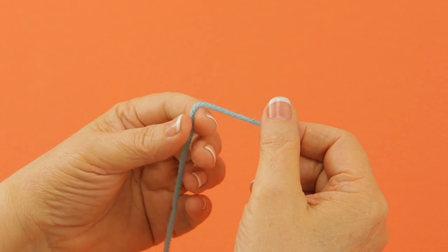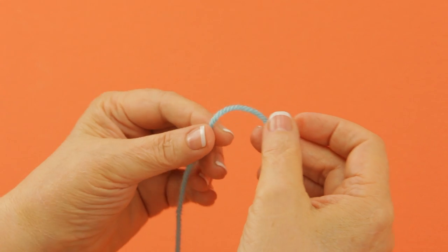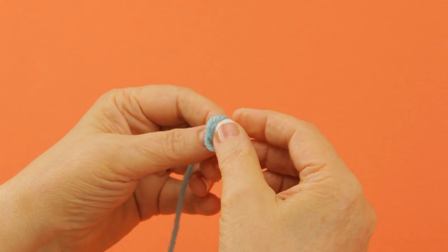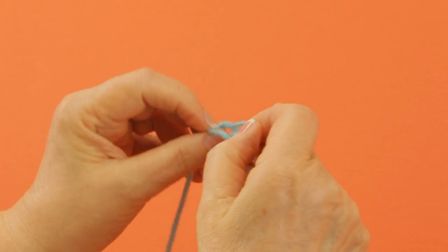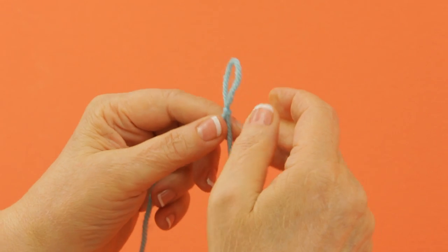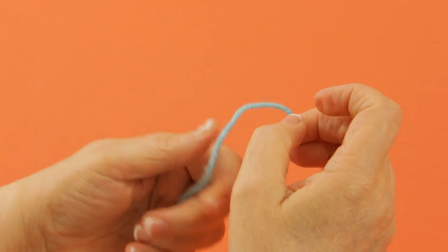This cast-on is called an e-wrap cast-on and like so many of the cast-ons, you start out with a slip knot. This is an adjustable knot. You can make it go completely away.